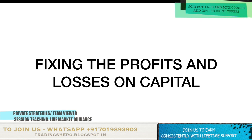Fixing the profits and losses depending on your capital is a very good point. You should always fix your profits and losses based on your capital. For example, if your capital is 10,000, you can make almost 1,000 profit per day — that should be your profit target. If the stop loss hits or it's a bad day, you should limit your losses to a maximum of 200 to 300 rupees. If you want to learn how to make 1,000 rupees from a capital of 10,000, you can join my course.